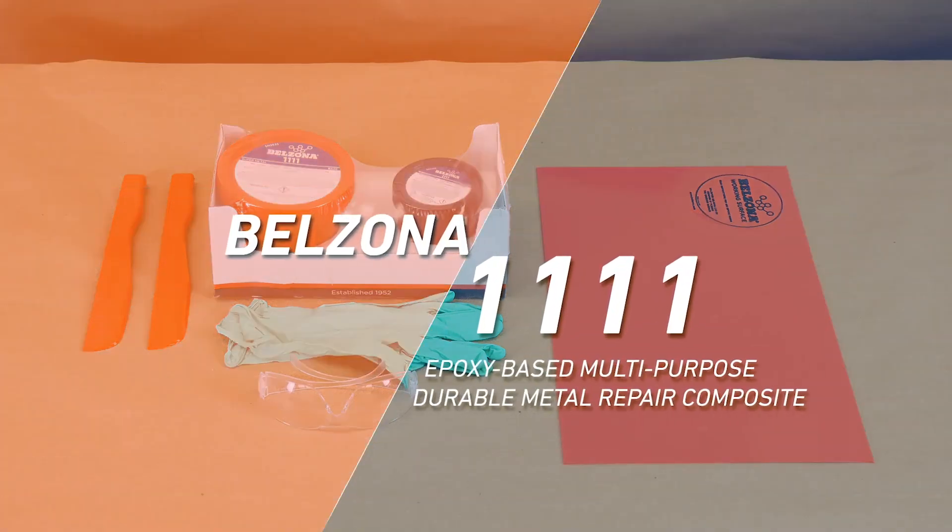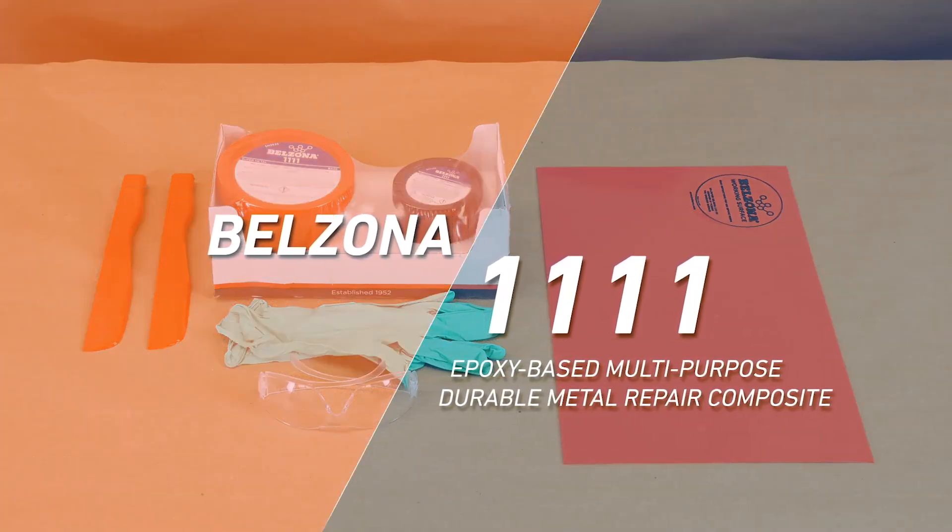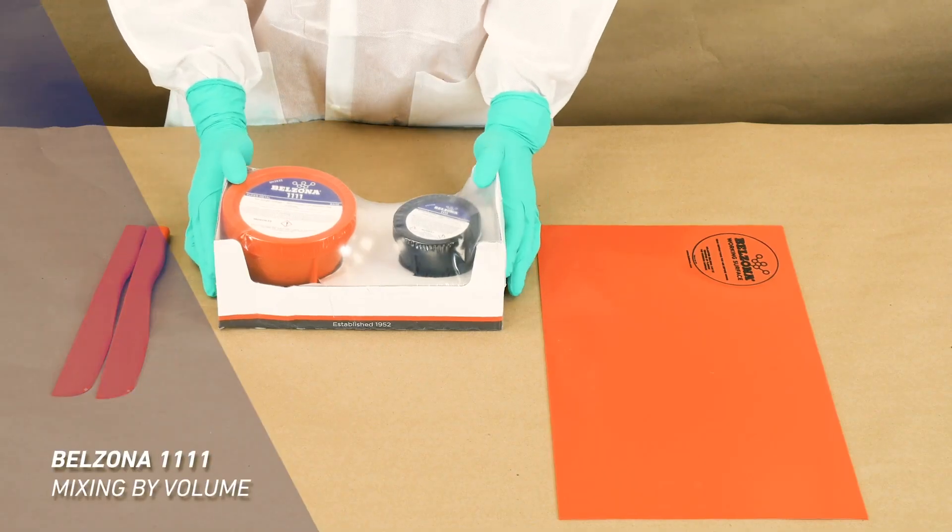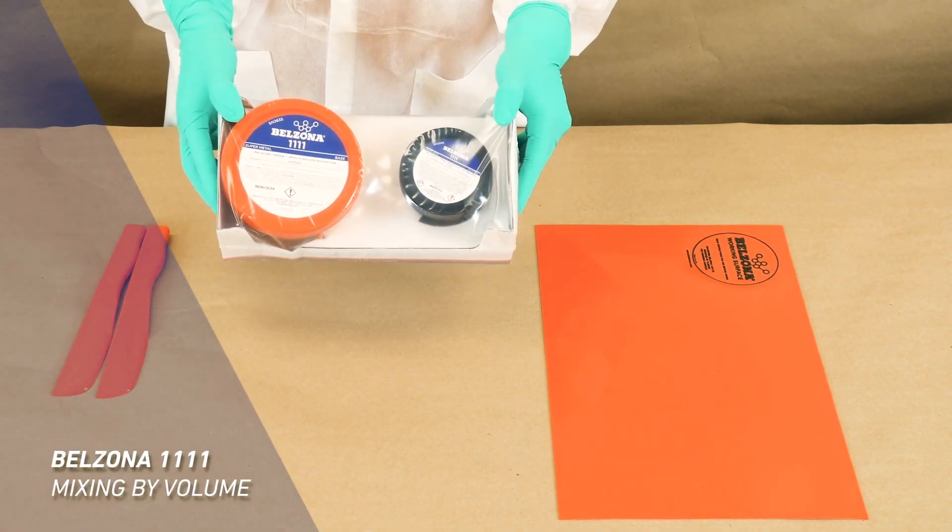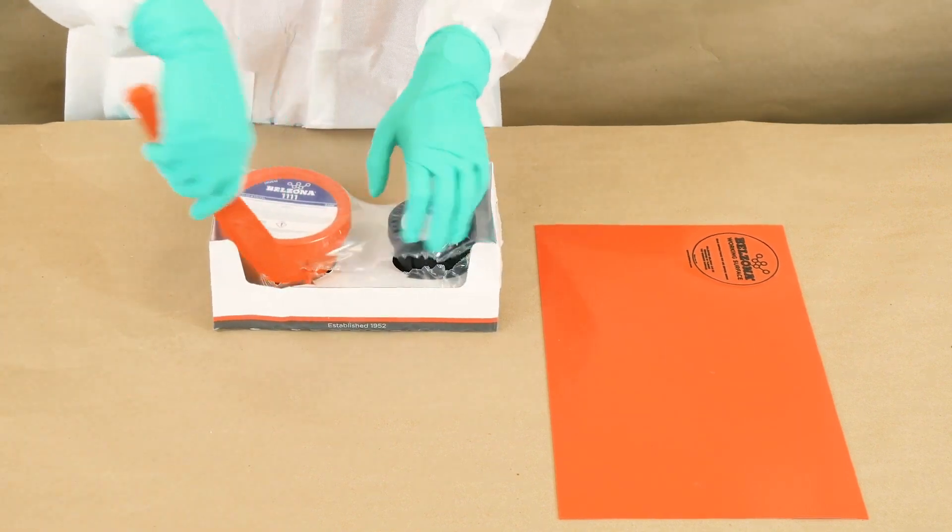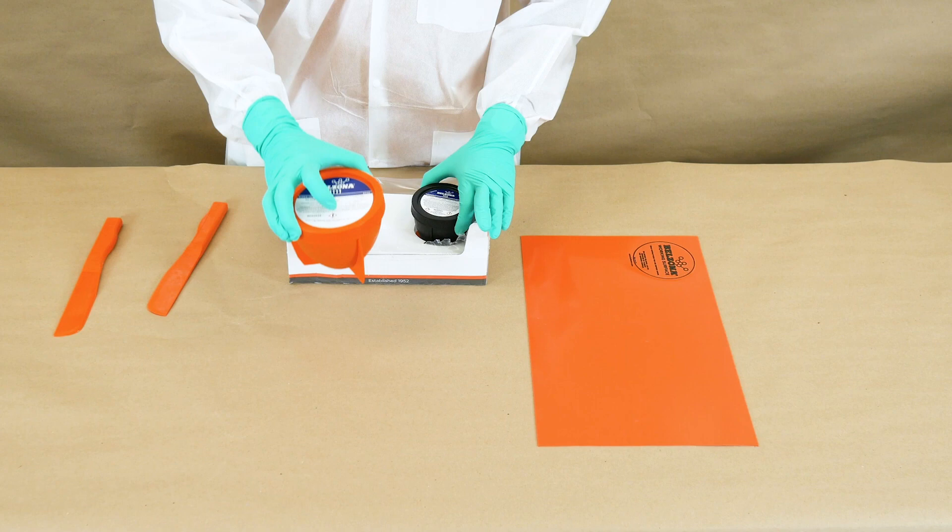Belzona 1111 is a two-component paste grade composite for repairing and rebuilding metal machinery and equipment. In this video we demonstrate how to mix Belzona 1111 by volume. One of the key factors of a Belzona application is a thorough mix of two component composites.